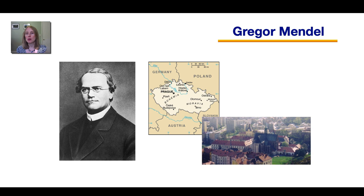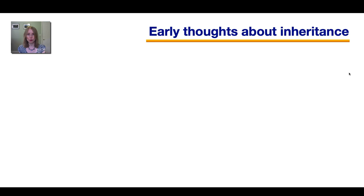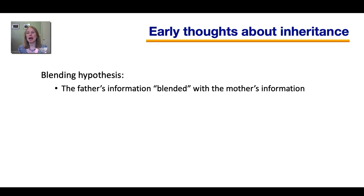So here's a picture of Mendel. He was a Catholic monk and he lived in a region that's now known as the Czech Republic, and that's actually where I'm from. So Mendel lived in the town of Brno, which is right here, and here's the picture of the monastery where he lived. And there he did experiments with pea plants through which he discovered the first rules of inheritance.